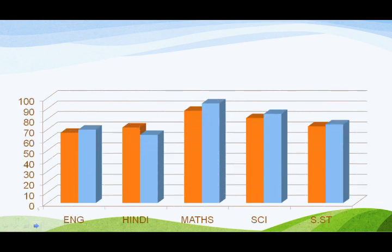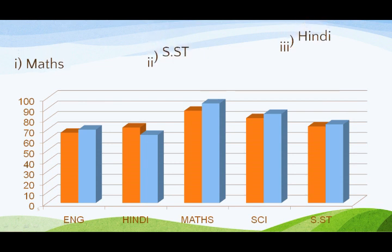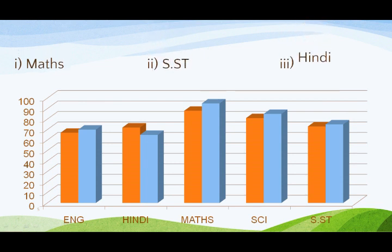Double bar graph banayenge. Along the x-axis, humne subjects liye hain. Along the y-axis, 1 square unit ko 10-10 ka gap pe show kar diya hai.